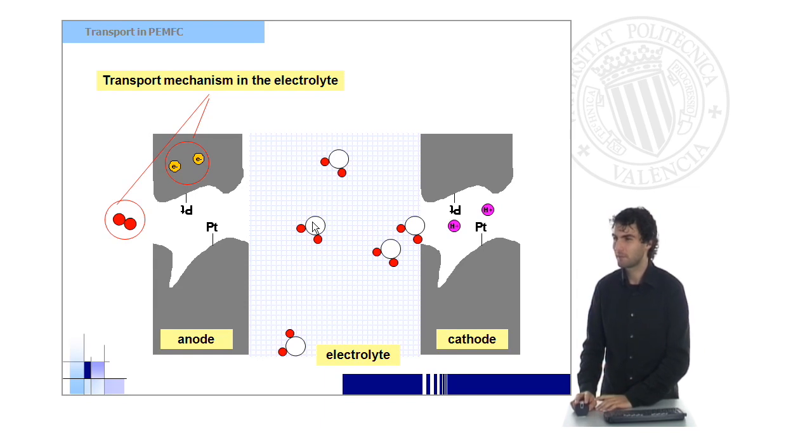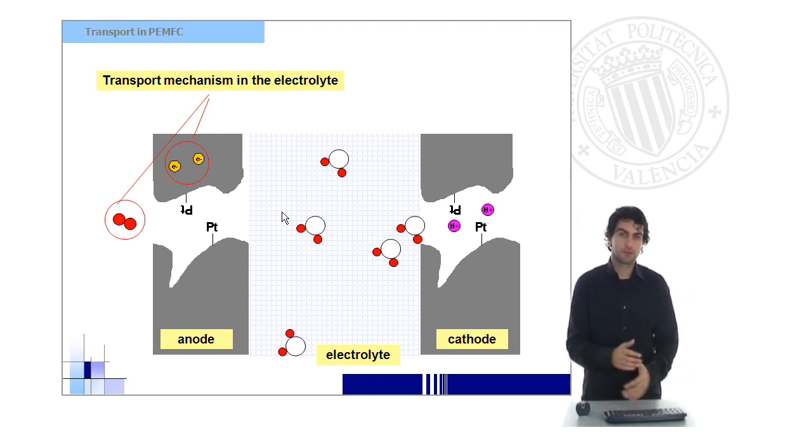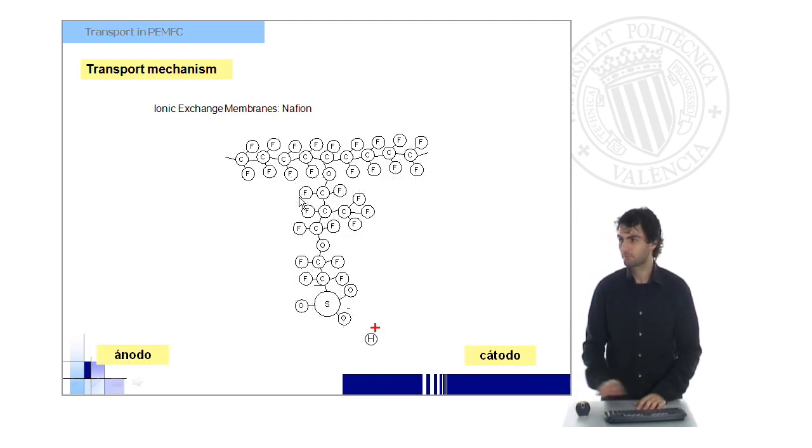Also, important to remember that electrolyte must be hydrated to a certain level, because we will see the water plays a very important role in the transport of the protons. Well, in general terms, in this kind of fuel cells, we will use an ionic exchange membrane. The most used, the most famous and just used worldwide in this kind of applications is Nafion,